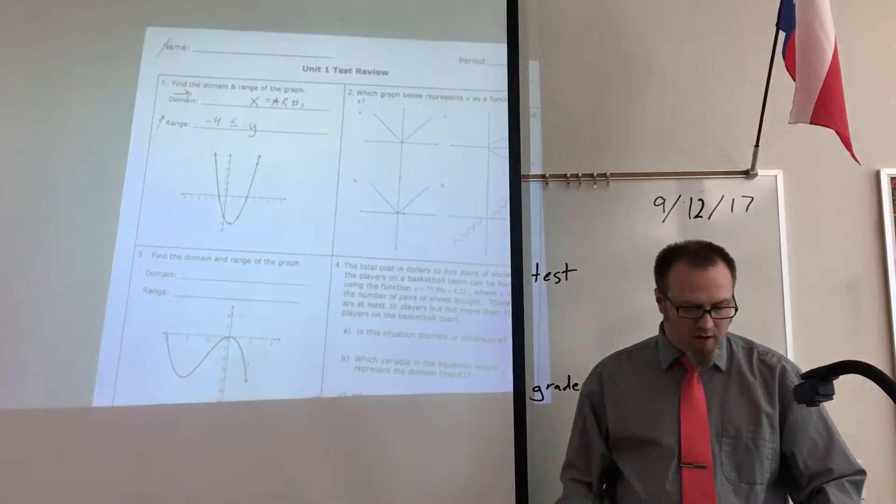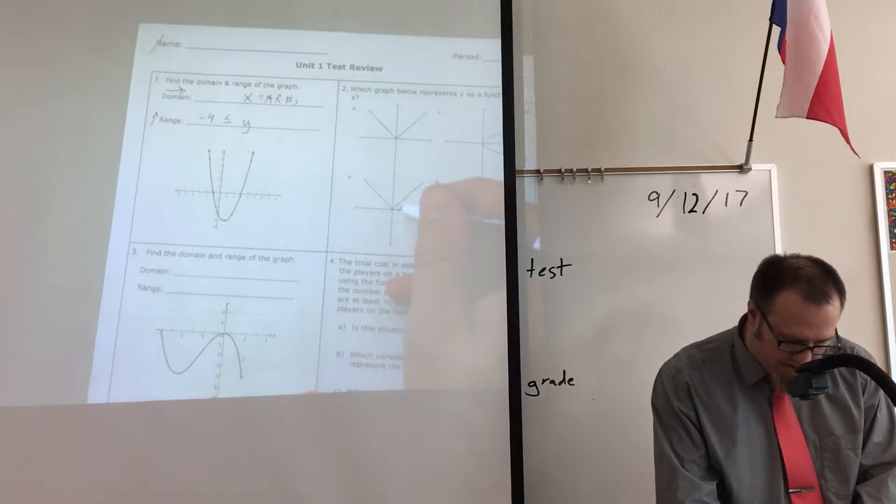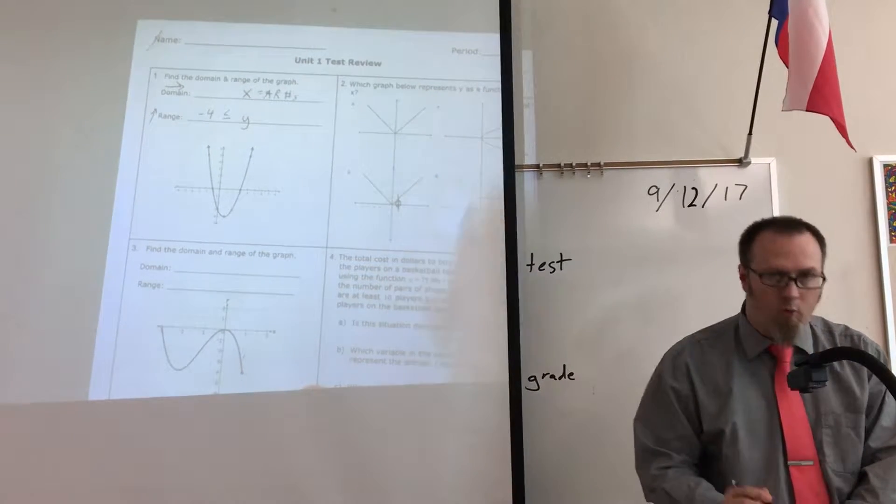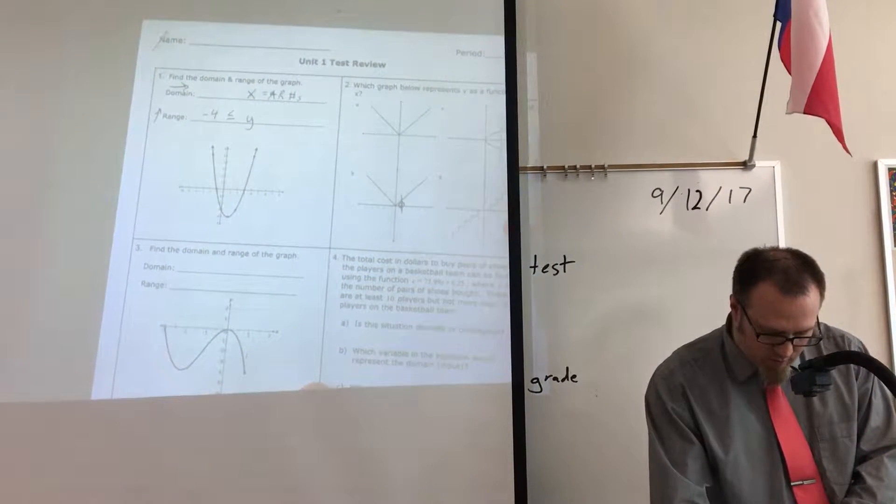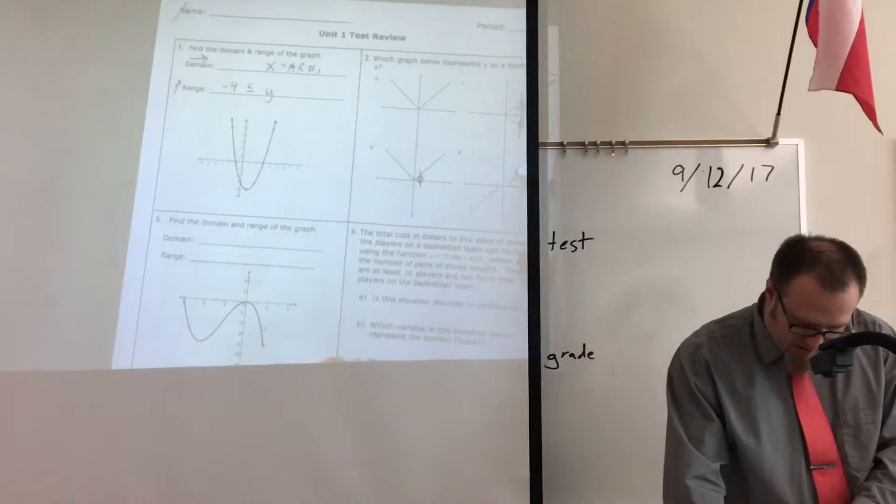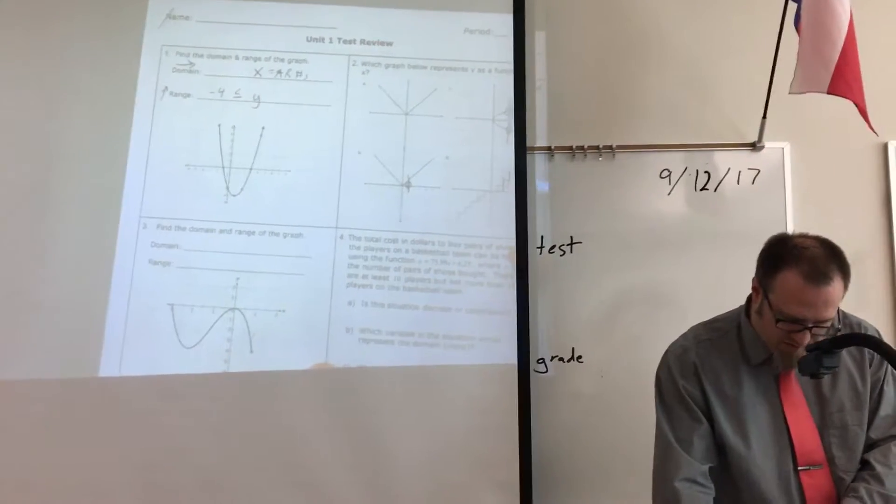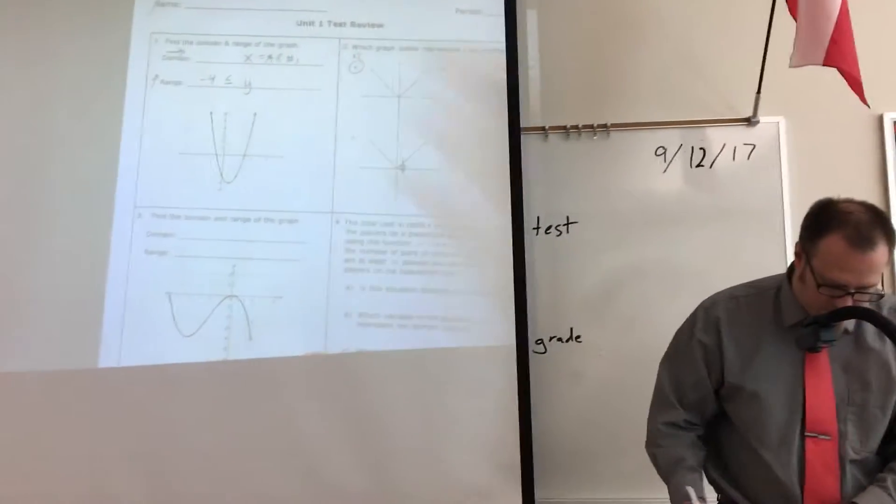On number two, if it passes the vertical line test, it's a function, but be careful. This one has a point right here, so it won't pass because of that. This one won't pass because two places, and this one won't pass because it repeatedly has vertical lines. This one's going to be the function.